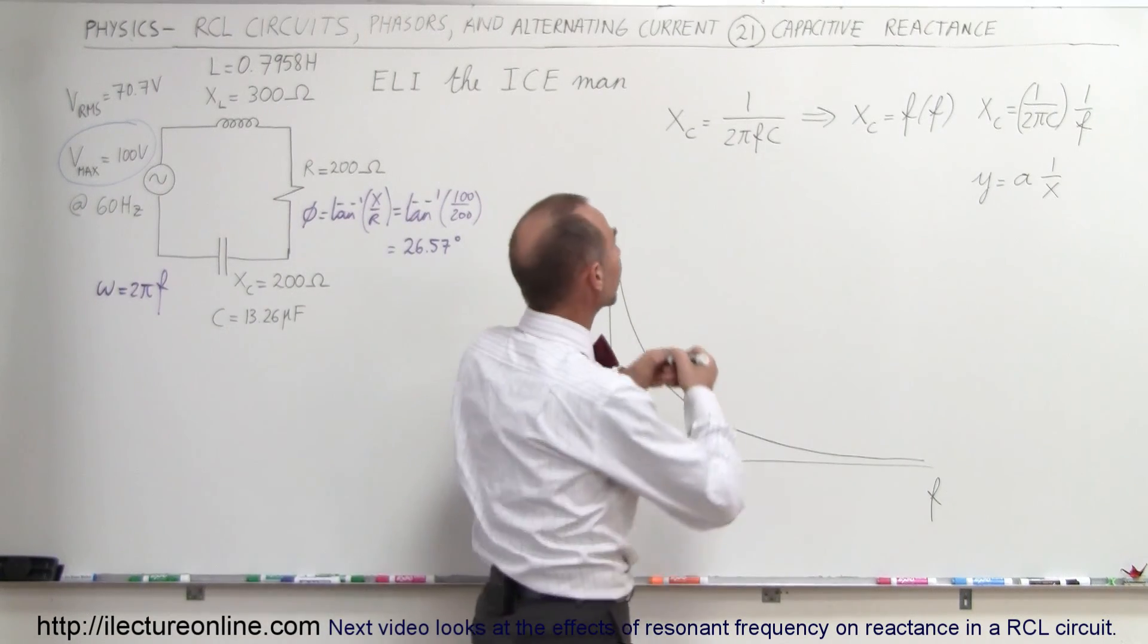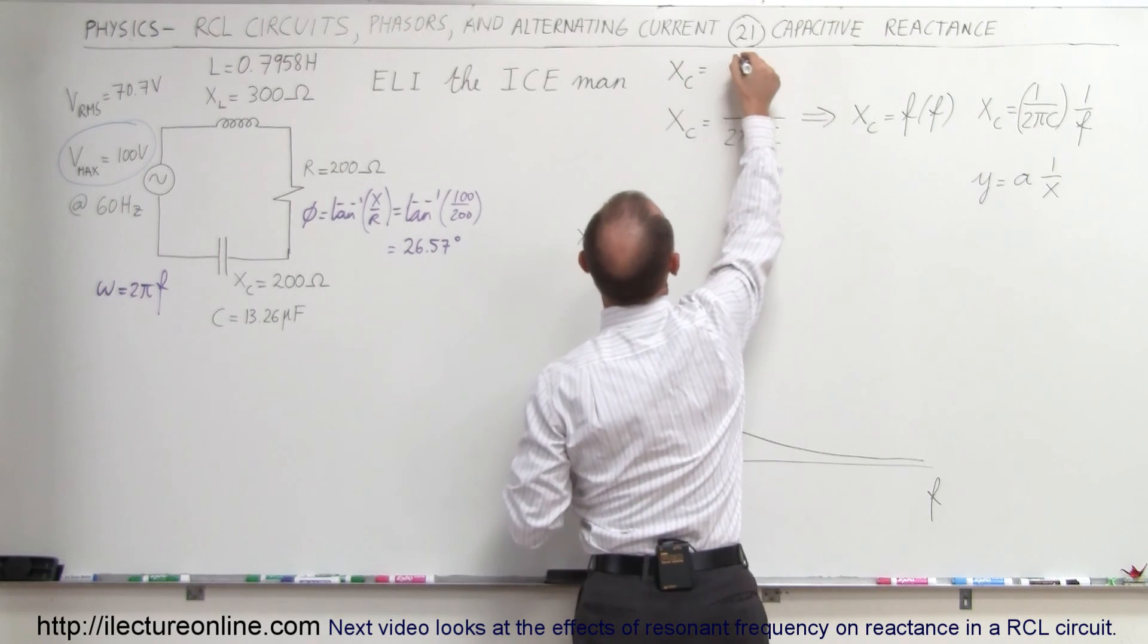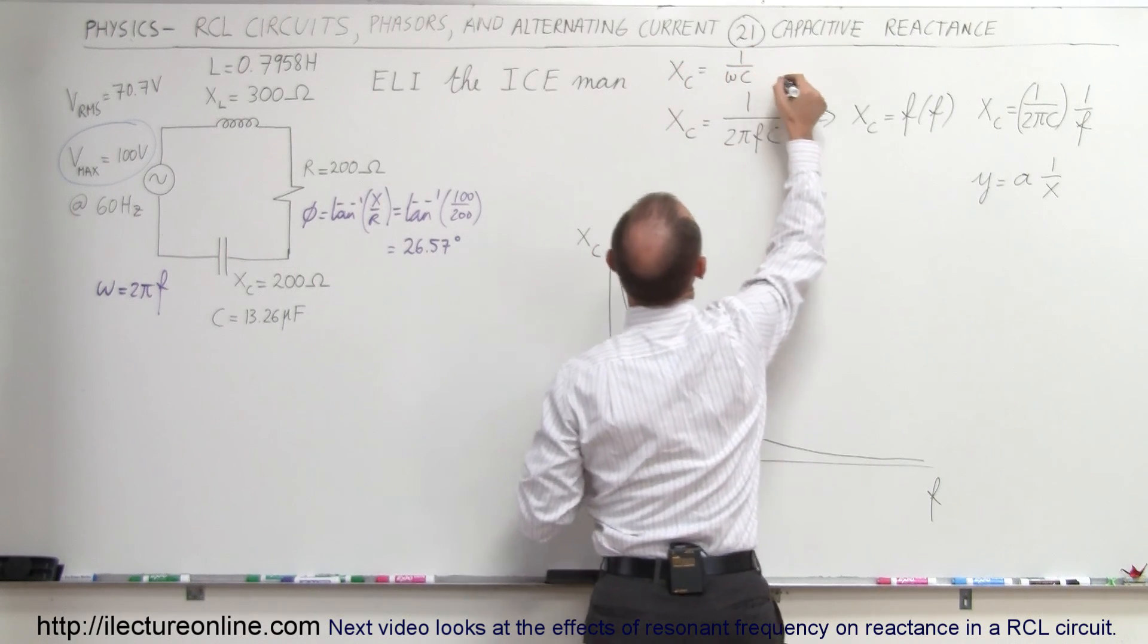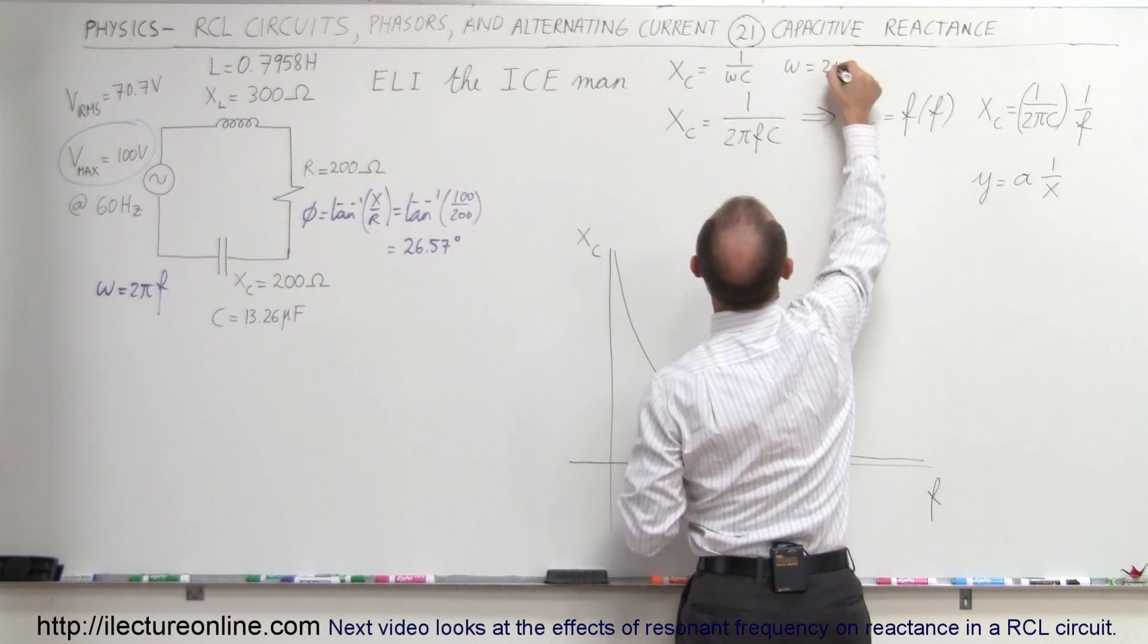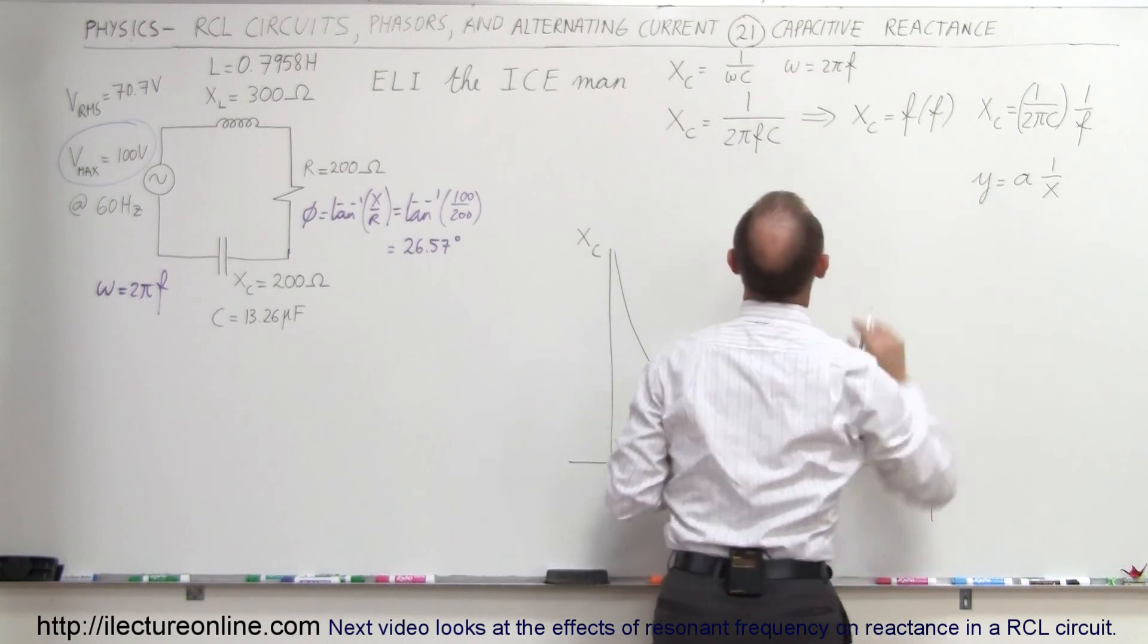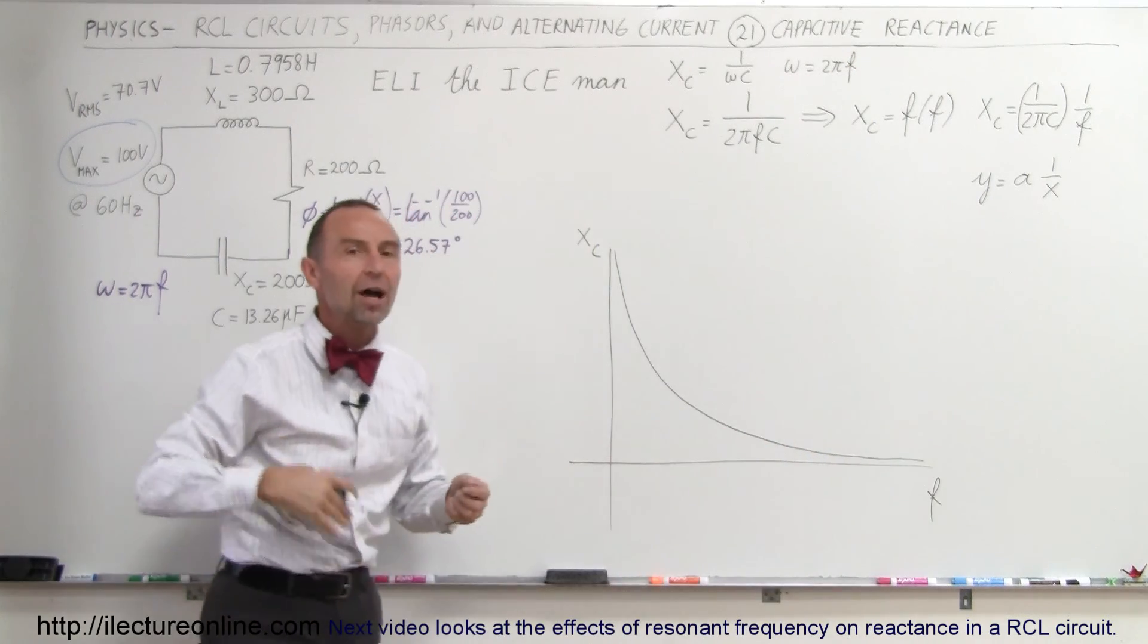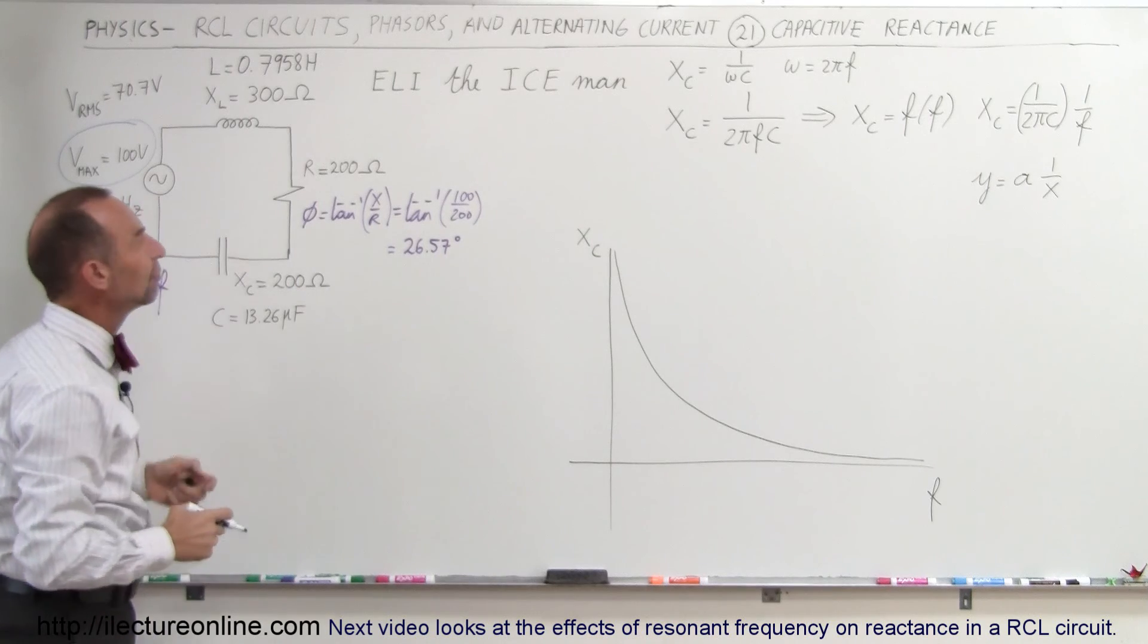We sometimes also write it like this: X_C can be written as 1 over ωC. Remember that ω equals 2πf. Omega is simply the radial frequency, and f is the oscillating frequency of the voltage source.